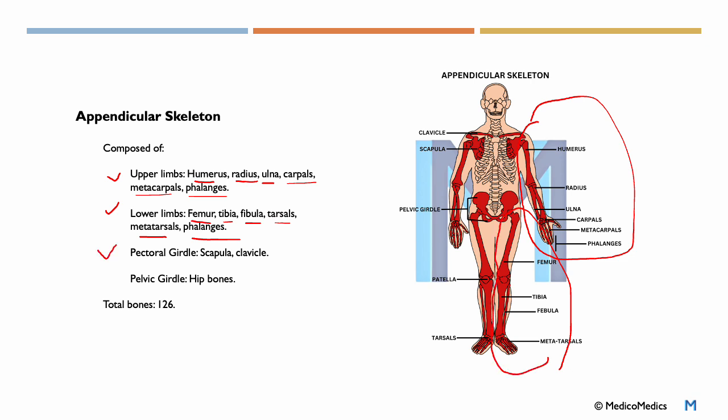Another thing we have is the pectoral girdle, which consists of the scapula and clavicle. This is the scapula right here, and we have the clavicles here. This is the other scapula. And then we have the pelvic girdle, which is essentially your hip bones. In total, 126. Let's do some mathematics. How many bones in the appendicular skeleton and the axial? We had 80 plus 126. That will give us a total sum of 206.